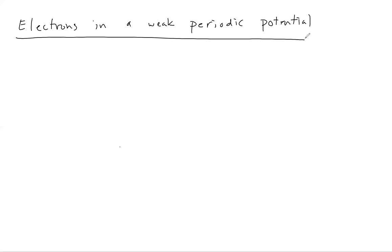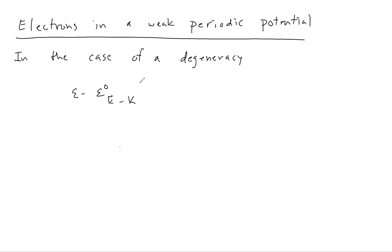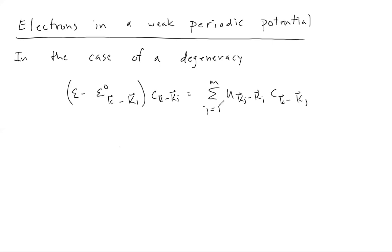At the end of the last mini lecture, we derived an expression for the energy shift of these levels that are degenerate. We found that the difference between the perturbed and unperturbed energies looks like this, where the index j going from 1 to m indexes this set of reciprocal lattice vectors that denote unperturbed energy levels that are degenerate. This equation, while it looks complicated, is actually something you have almost certainly seen before — it's really just an equation for m coupled quantum levels.